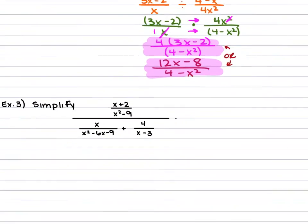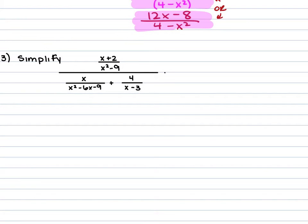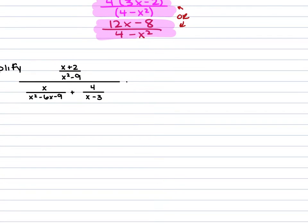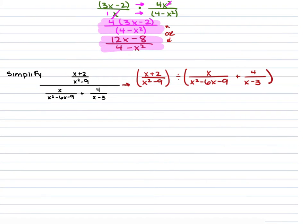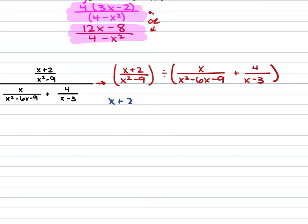In example 3, we are given (x minus 2)/(x squared minus 9), all over x/(x squared minus 6x plus 9) plus 4/(x minus 3). I'm going to rewrite this using division so it makes more sense. This gives us (x plus 2)/(x squared minus 9) divided by x/(x squared minus 6x plus 9) plus 4/(x minus 3). I'll rewrite the first fraction with its denominator factored: x plus 2 over (x minus 3)(x plus 3).